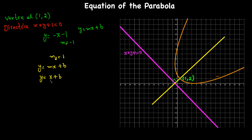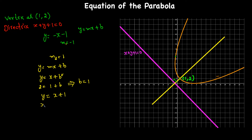To find b, we plug in the vertex (1, 2) since the axis passes through it: 2 = 1 + b, so b = 1. The equation of the axis line is y = x + 1, or equivalently x - y + 1 = 0. So equation 1 is the directrix x + y + 1 = 0, and equation 2 is the axis x - y + 1 = 0.